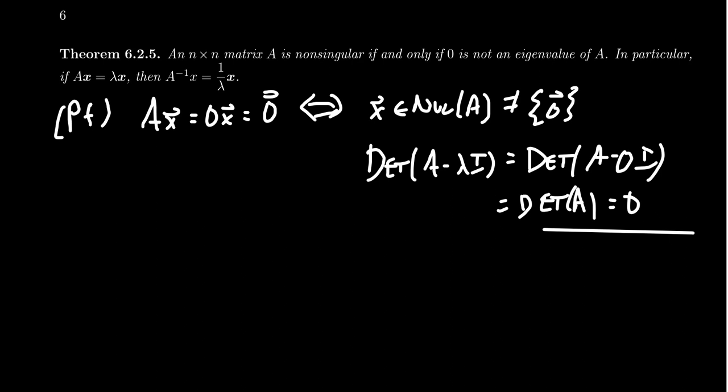In fact, when we have a non-singular matrix, we can find the eigenvalues of the inverse in the following way. Say that AX equals lambda X. If the matrix is non-singular, you can multiply both sides by the inverse of the matrix. On the left-hand side, A inverse times A will give us the identity, so we're left with just X.